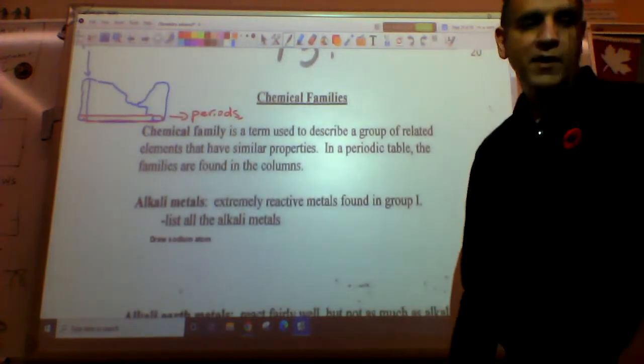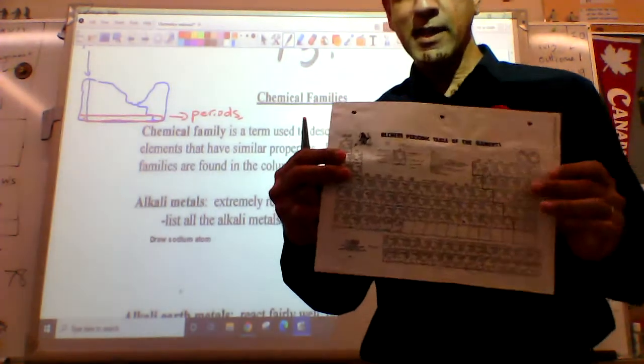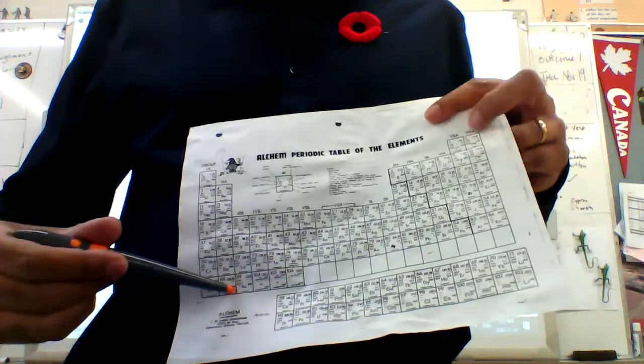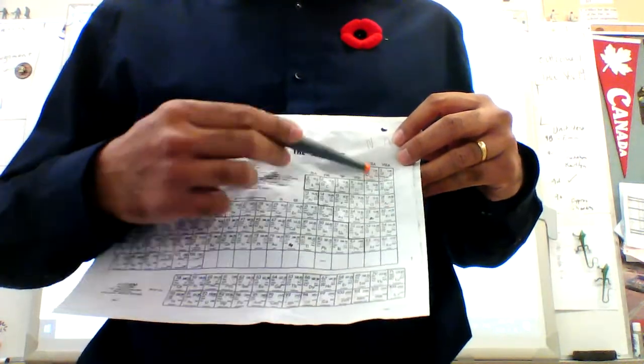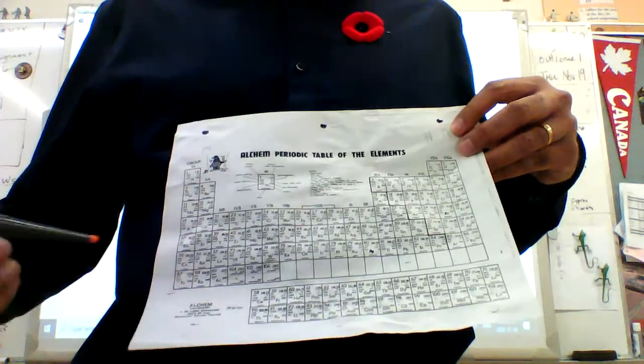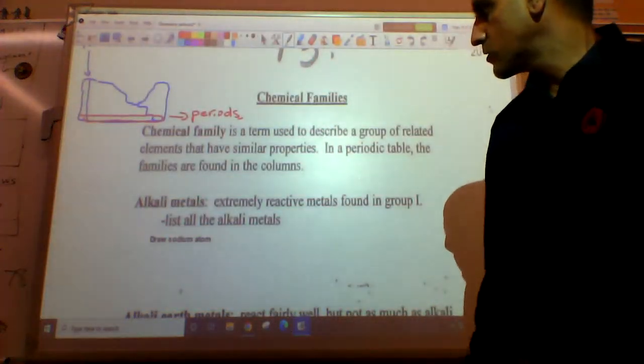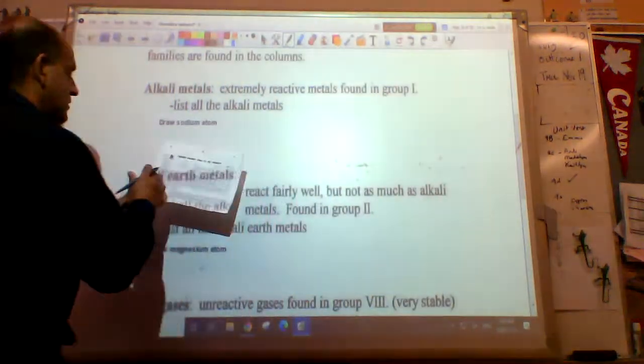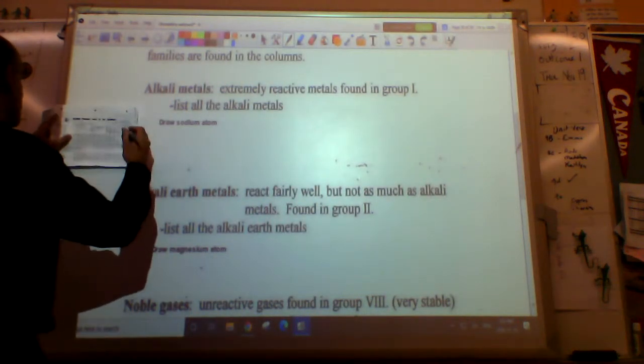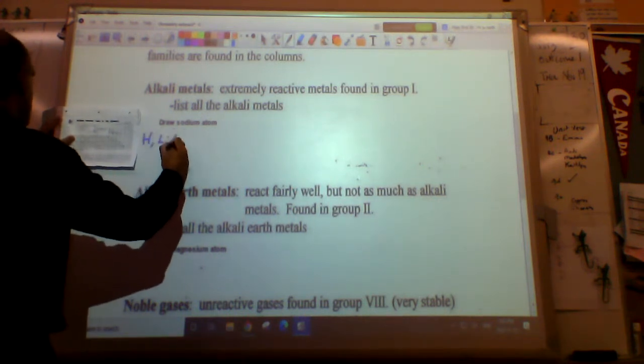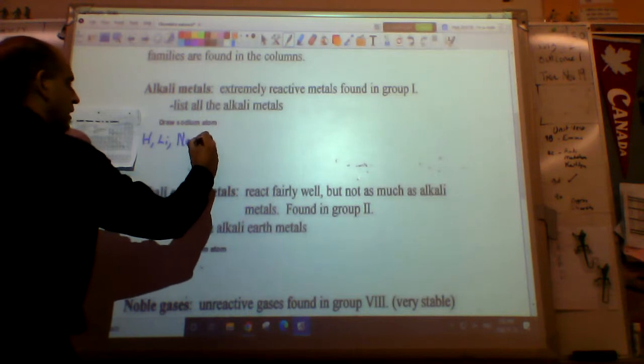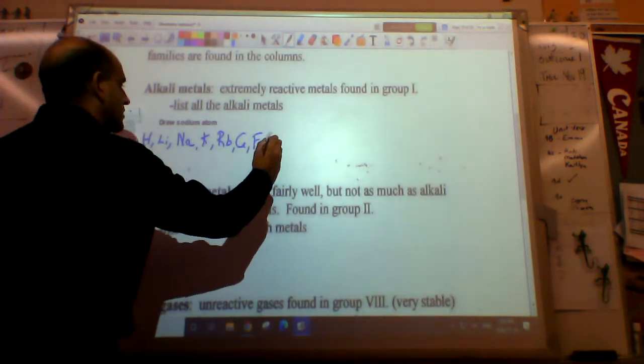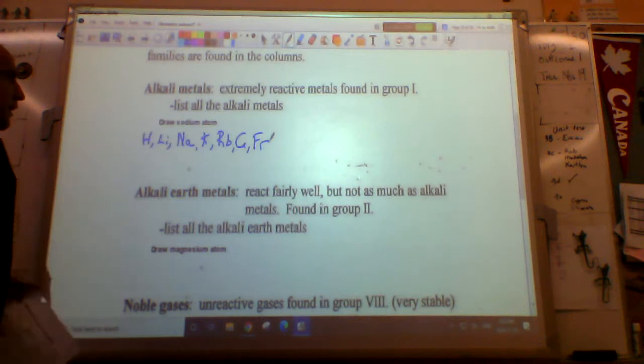The first group is the alkaline metals. They're in group one. Grab your periodic table. Group one is here, group two is there. This side is group eight or 18. We're looking at group one. Everything in group one behaves the same way. List all the alkaline metals - they're extremely reactive.